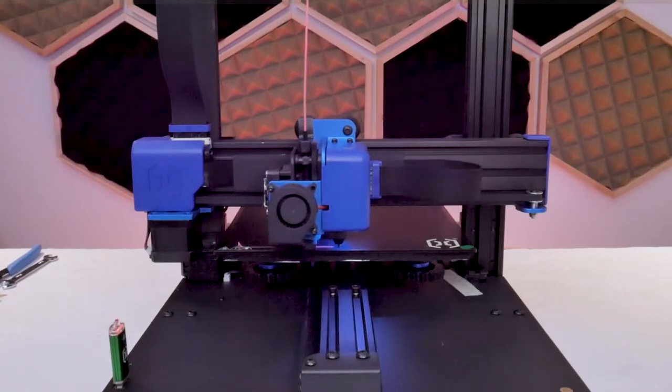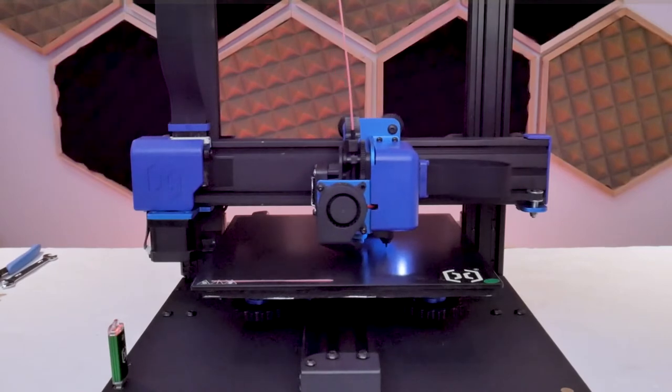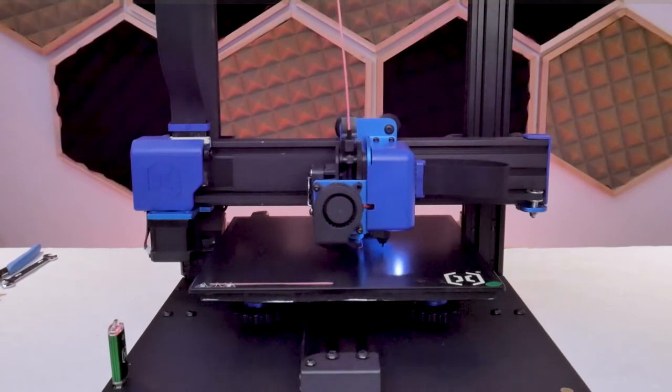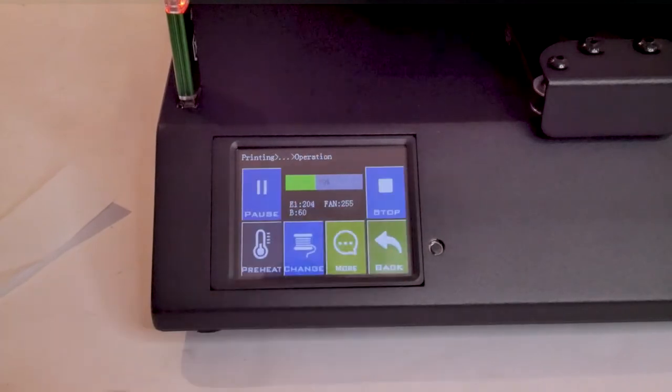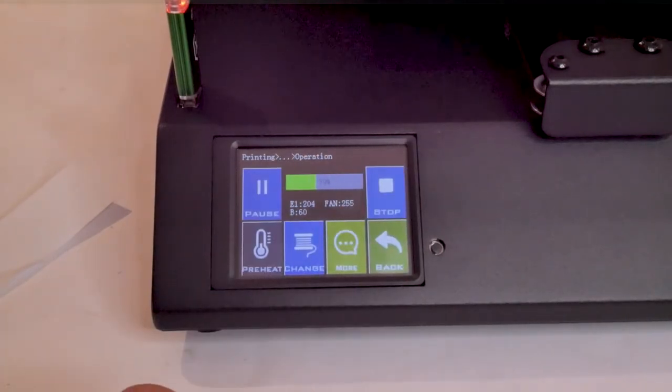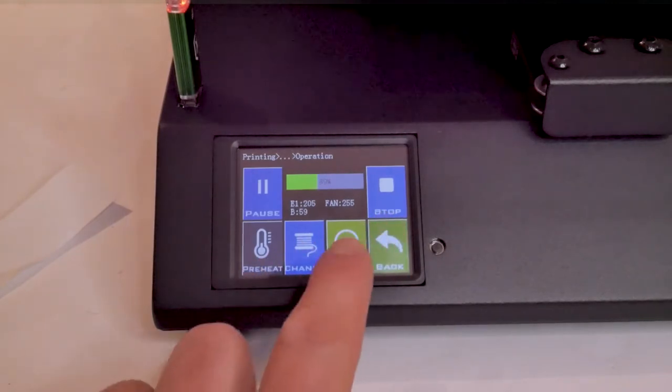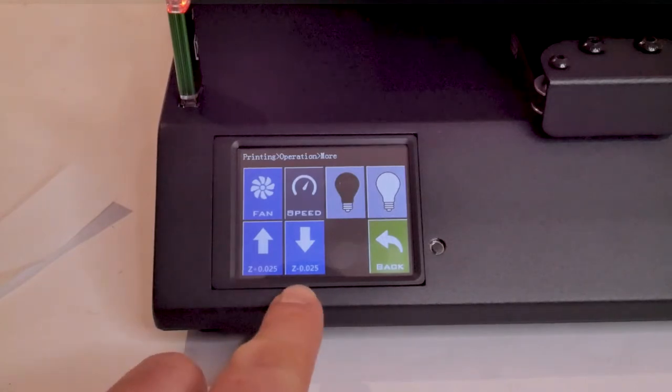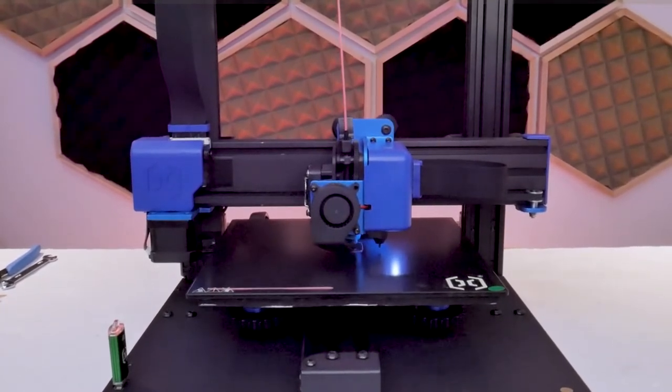During the first layer of your print if you are finding that you are having first layer adhesion issues, this is where you can go back into the menu and make those small changes to your zed offset. If the nozzle is too far away from the print bed and the filament is not sticking at all, then you're going to want to move the nozzle down closer to the print bed. And if you have too much squish going on then you can use the up button to move the nozzle up a little higher. Doing this while the printer is laying down that first layer is very convenient because you immediately get to see the effect of the changes that you're implementing.